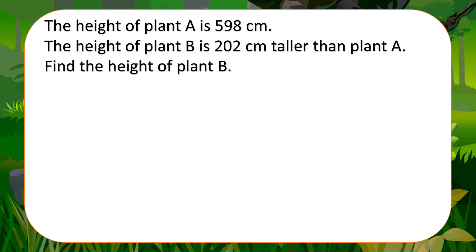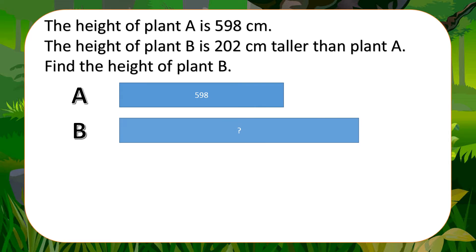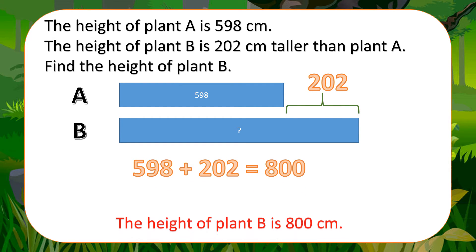The height of plant A is 598 centimeters. The height of plant B is 202 centimeters taller than plant A. Find the height of plant B. The height of plant B is 800 centimeters.